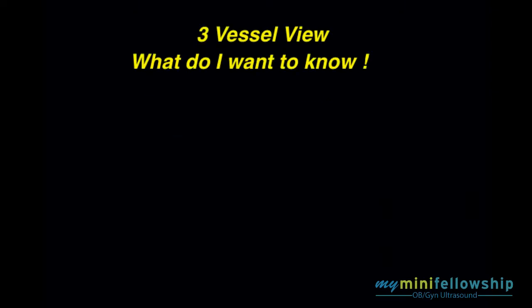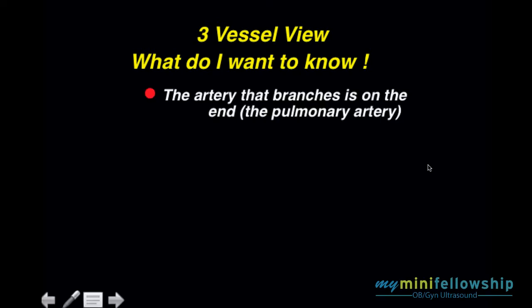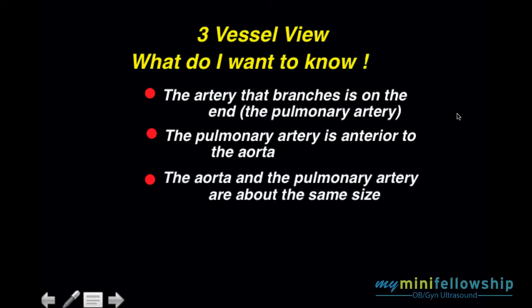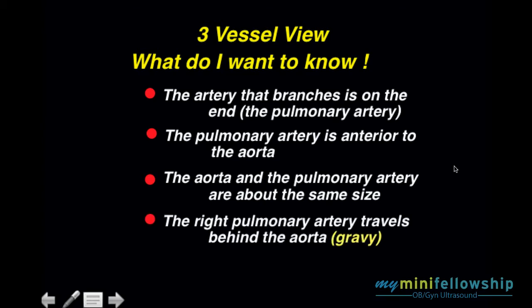What do I want to know about the three-vessel view? I want to see that the artery that branches is on the end — that's the pulmonary artery. I want the pulmonary artery to sit in a more anterior position than the aorta. I want the aorta and pulmonary artery to be about the same size — I'll modify that criterion a little later. Finally, the right pulmonary artery travels behind and touches the aorta, but I don't need to see that specifically; any branch confirms the pulmonary artery.